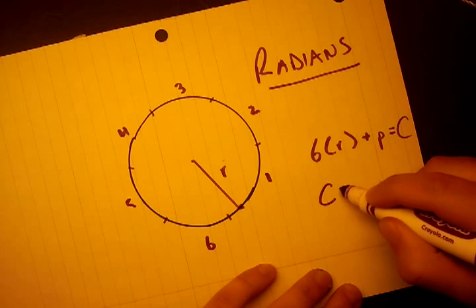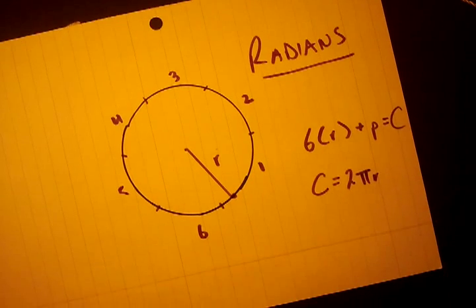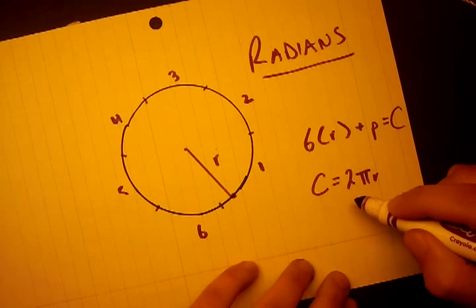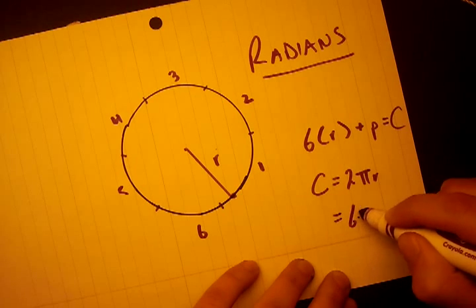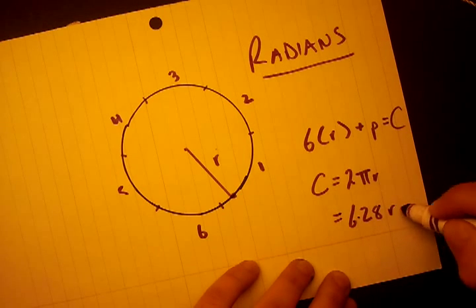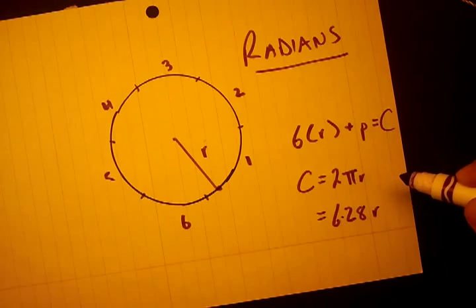But we all know the circumference of the circle is given by 2πr. And since π is about 3.14, 2π is about 6.28. So it equals 6.28 times r. So that little piece must be about 0.28.